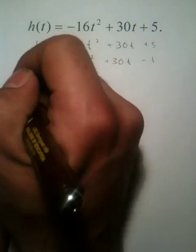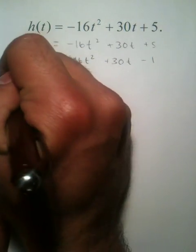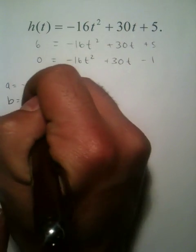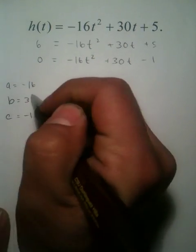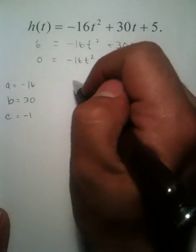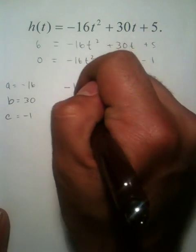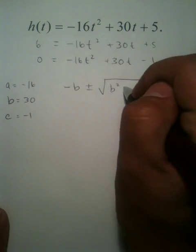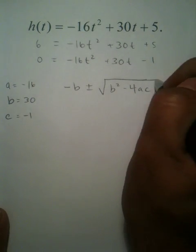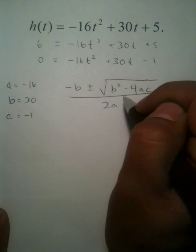Well, with the quadratic formula, we have our values a equaling negative 16, b equaling 30, and c equaling negative 1. Now, we're going to plug that into this equation right here. Negative b plus or minus b squared minus 4 times a times c all over 2a.